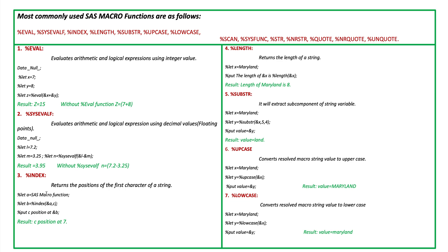When we run this code, B equals 7, meaning the seventh position. Counting the characters: 1-s, 2-a, 3-s, 4-space, 5-m, 6-a, 7-c — the first occurrence of 'c' is at the seventh position. Number four is %LENGTH. It returns the length of a string. Suppose we have macro variable X with value 'Maryland'. We print using %PUT, and the length evaluates to 8.